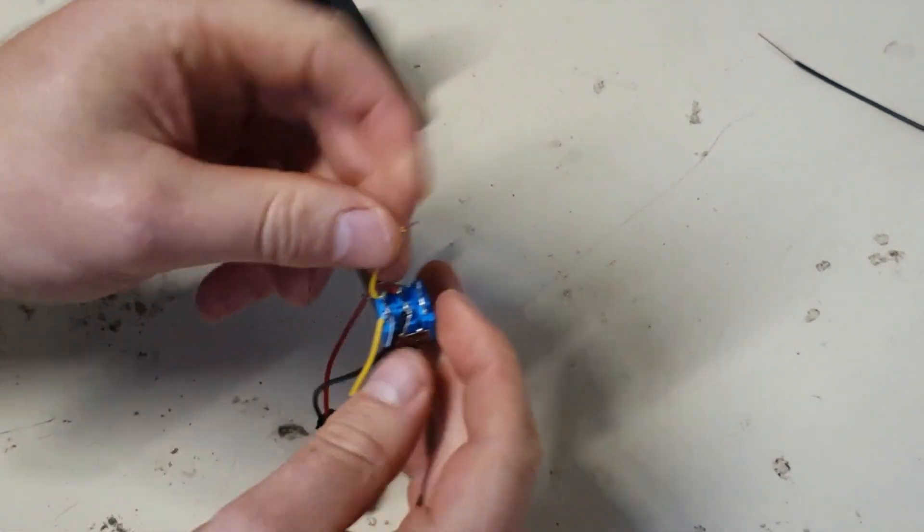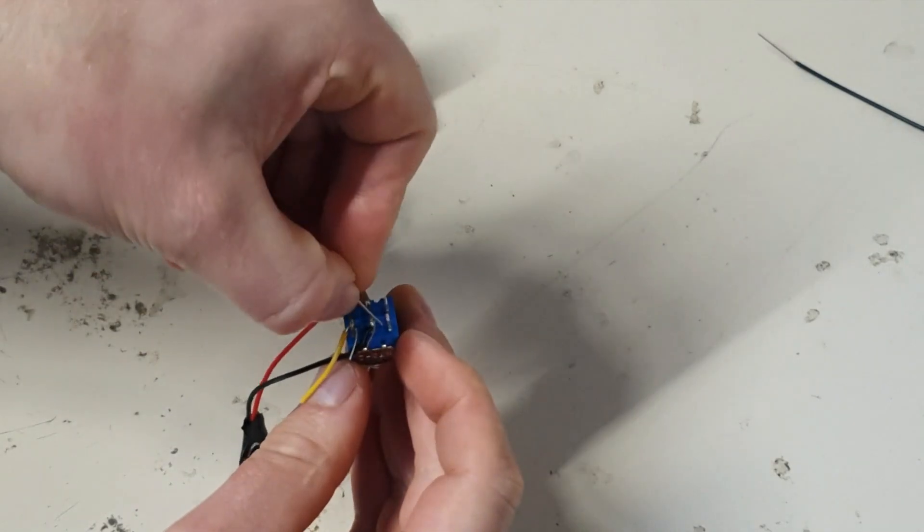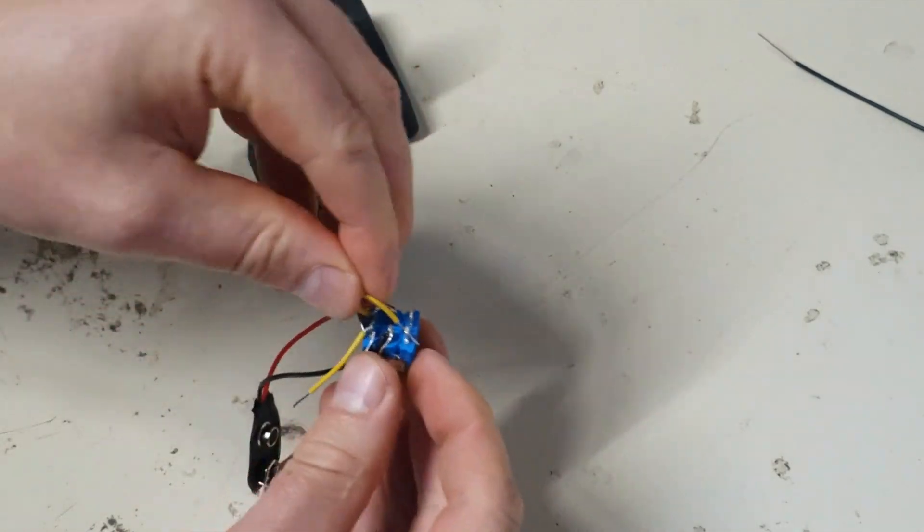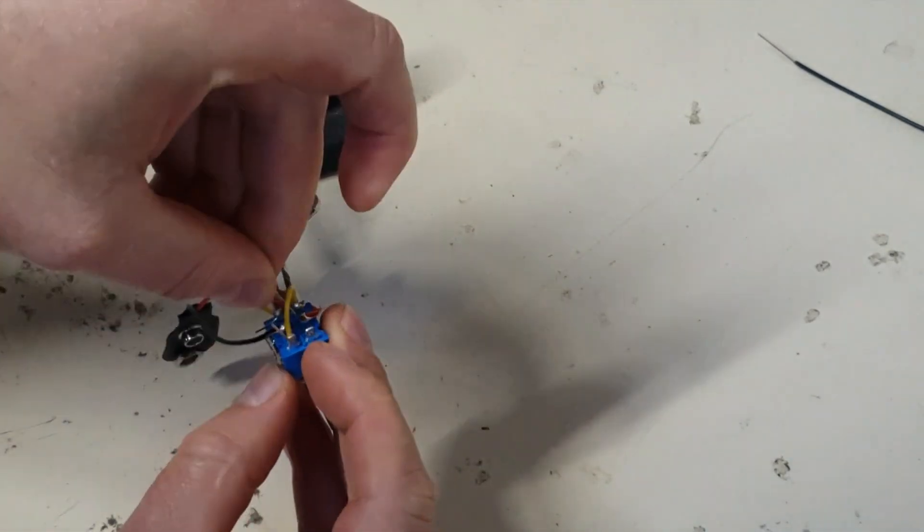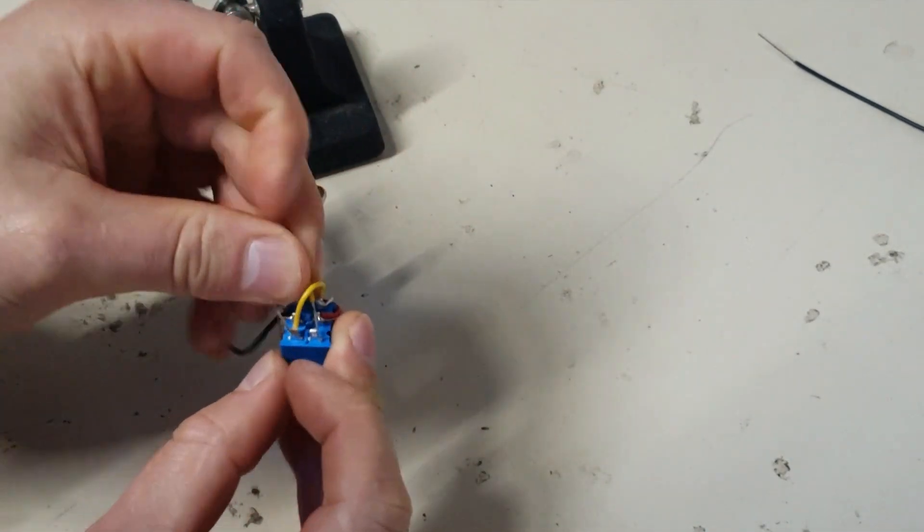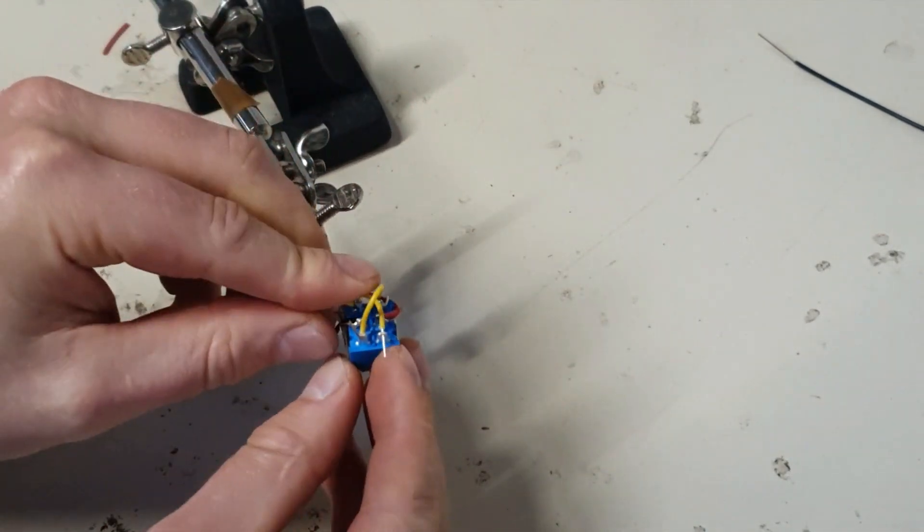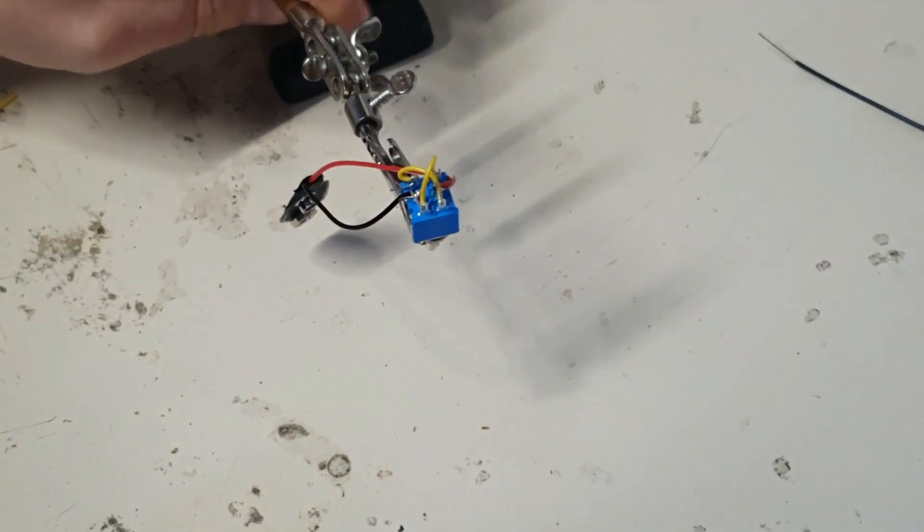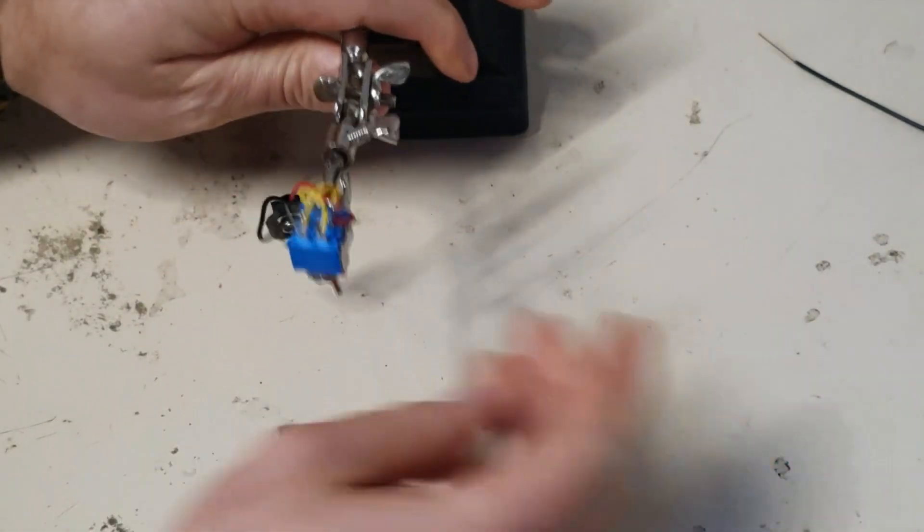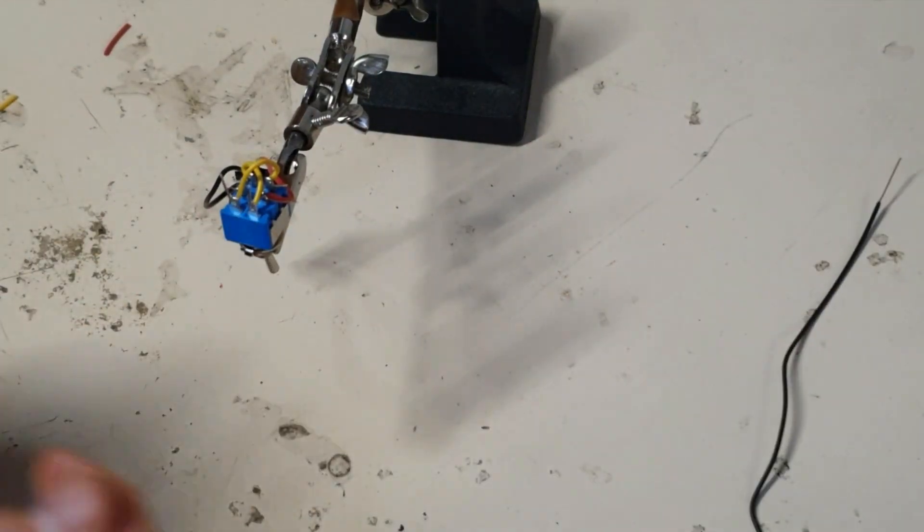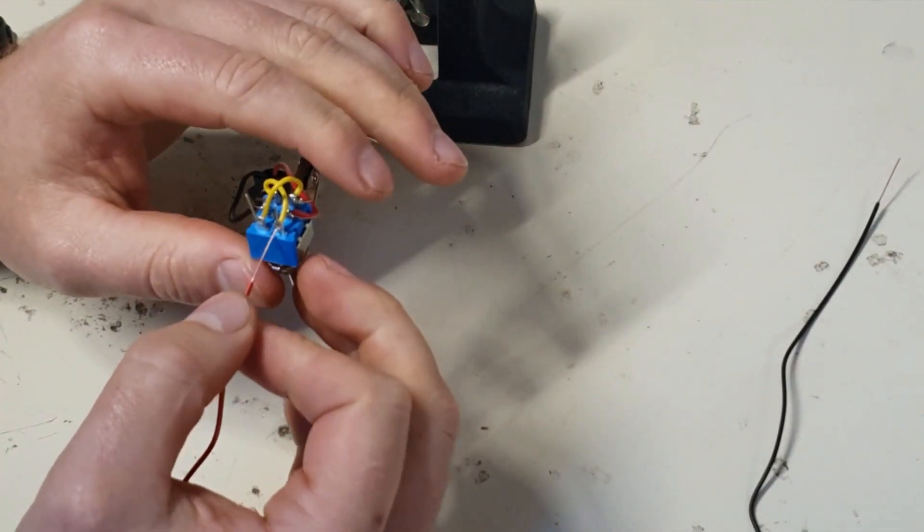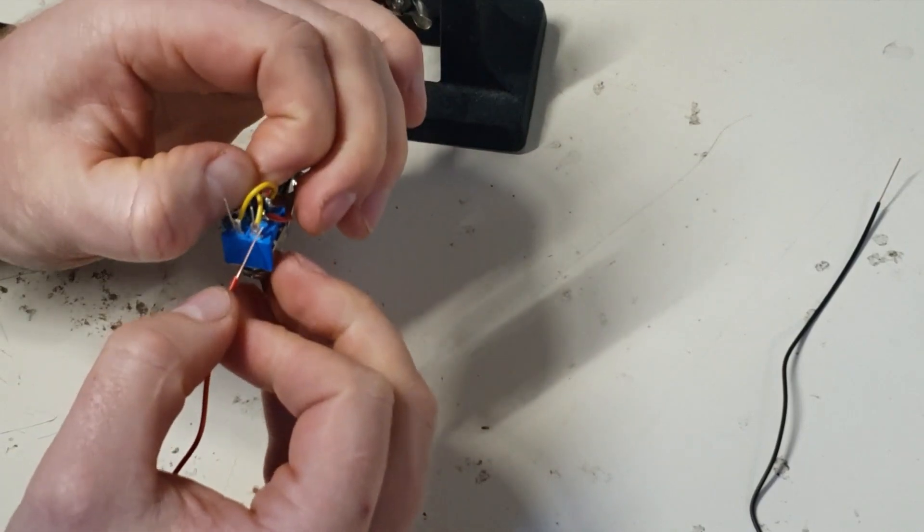And then we loop the diagonals across. So the one on the left goes to the opposite contact on the right and vice versa. So this takes a little bit of playing around with. Again, using the helping hand here is really handy. So remember we do not solder these until both of the wires are in place. So there's two wires going into this contact.